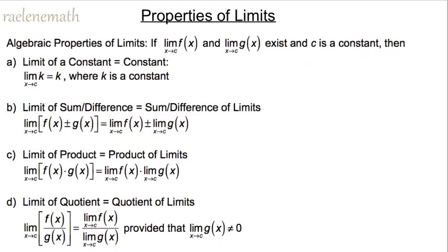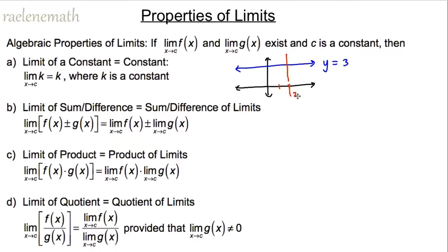The first property says that the limit of a constant is equal to that constant, and a constant function is just a horizontal line. So if y equals 3 and we want x to approach 2, as x approaches 2 from the left or right side, y approaches that constant. So the limit of the constant as x approaches c equals the constant.